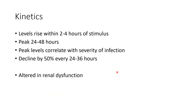The kinetics are as follows: levels rise within 2 to 4 hours of the stimulus (i.e., bacterial infection) and peak in 1 to 2 days. Peak levels correlate with the severity of infection — higher peak levels indicate more severe bacterial infection. There is a decline of 50% every 24 to 36 hours, so serial procalcitonin measurements allow us to see whether antibiotics are working and whether the infection is resolving. Notably, it is altered in renal dysfunction, where baseline levels are high, the rise is greater, and decline takes longer.